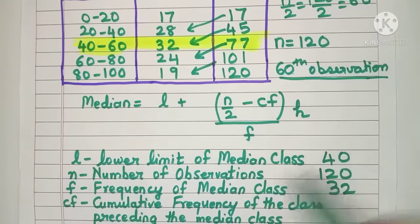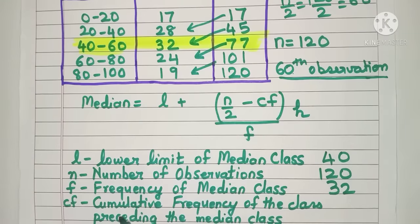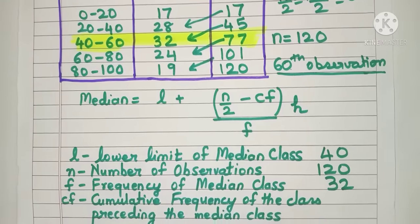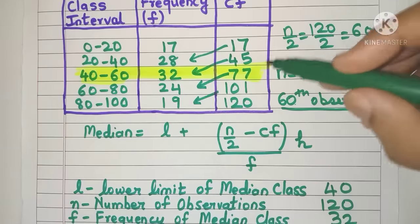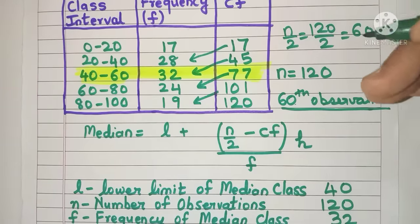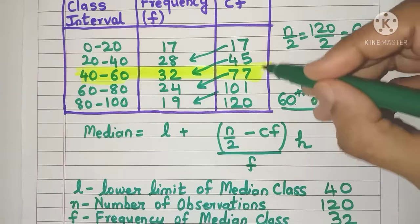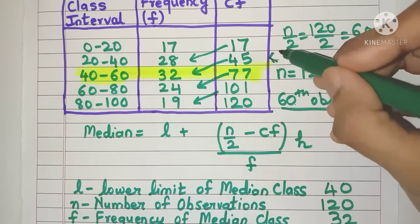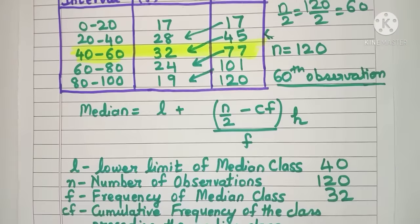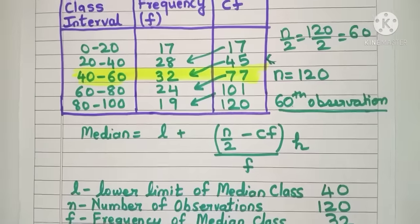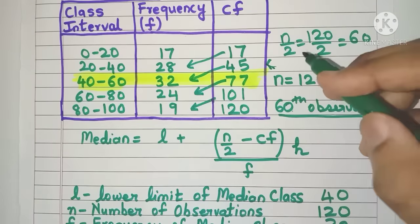Don't confuse F and CF, they are totally different. Now the next thing is CF, cumulative frequency of the class preceding the median class. Preceding means coming before. Preceding the median class is this class. What will be the CF of this class? 45. So we have to write here 45.